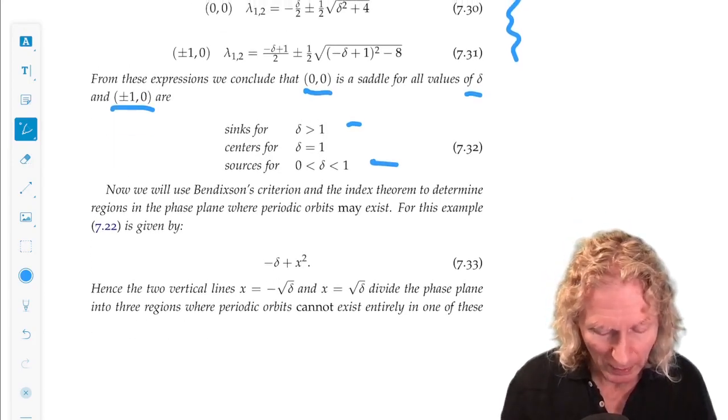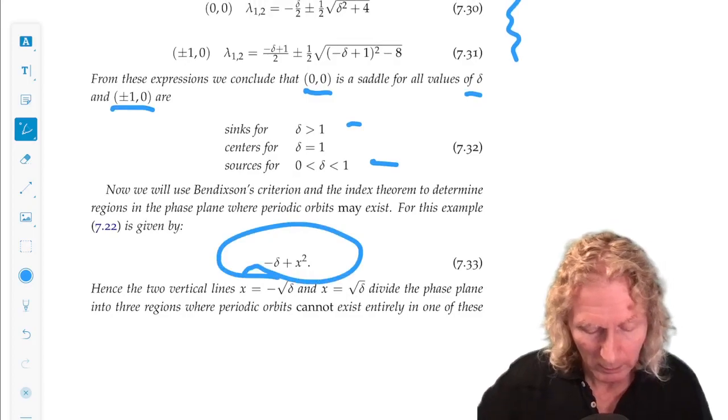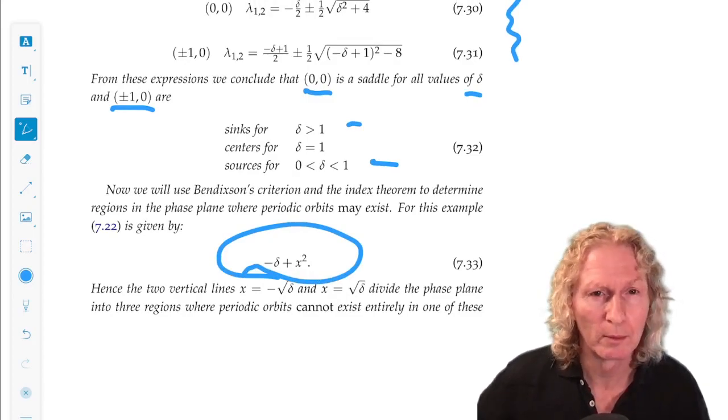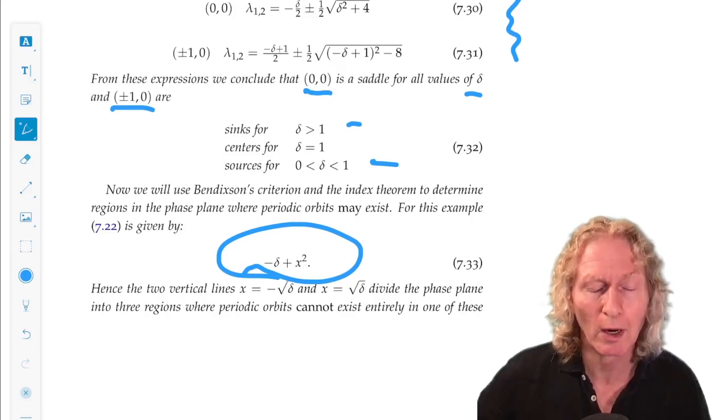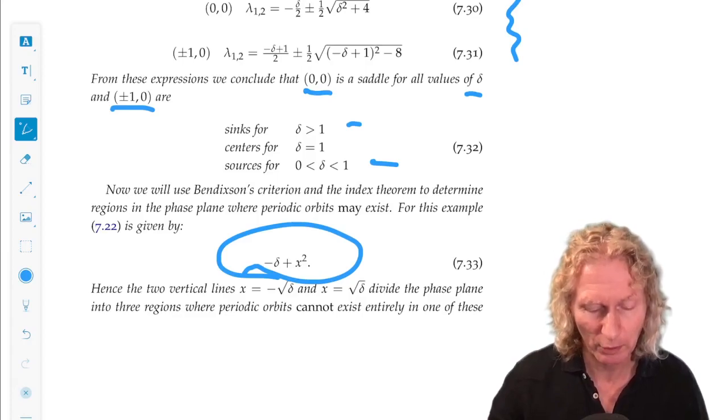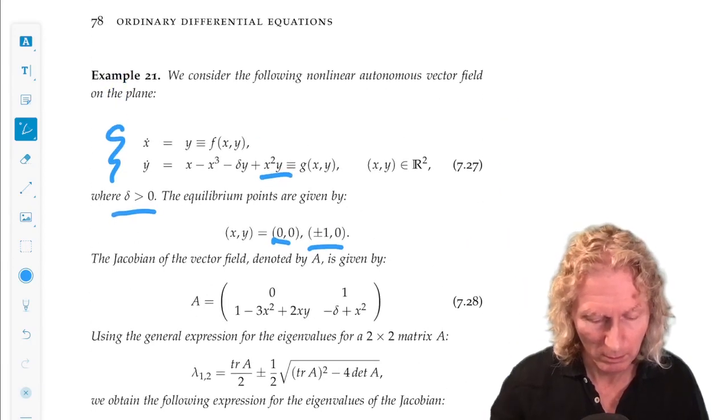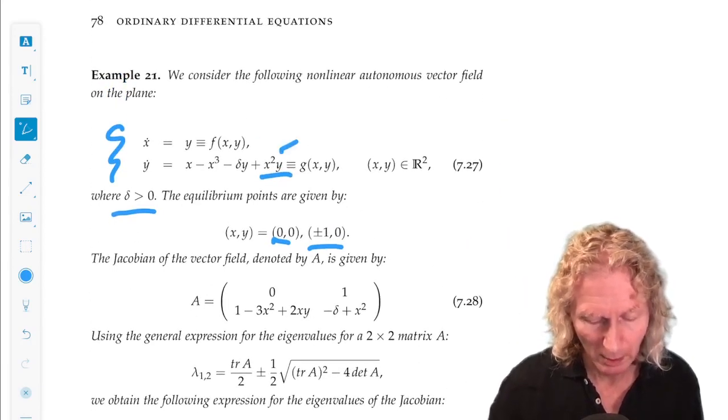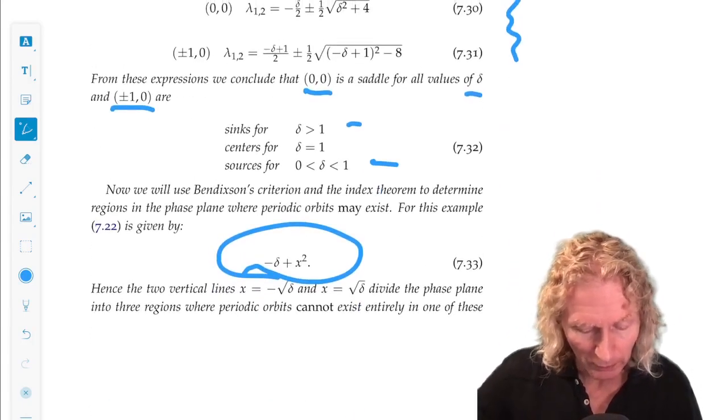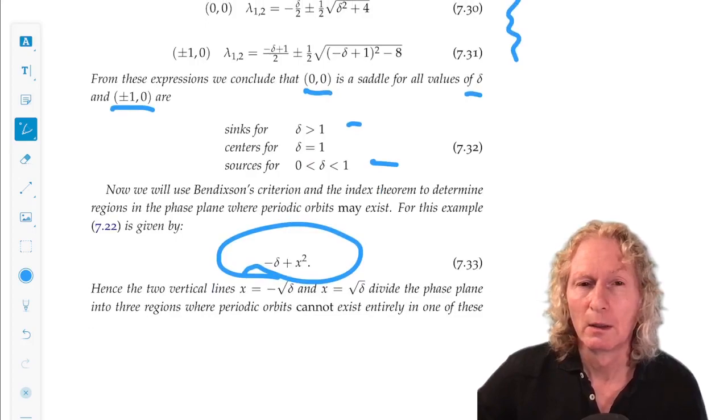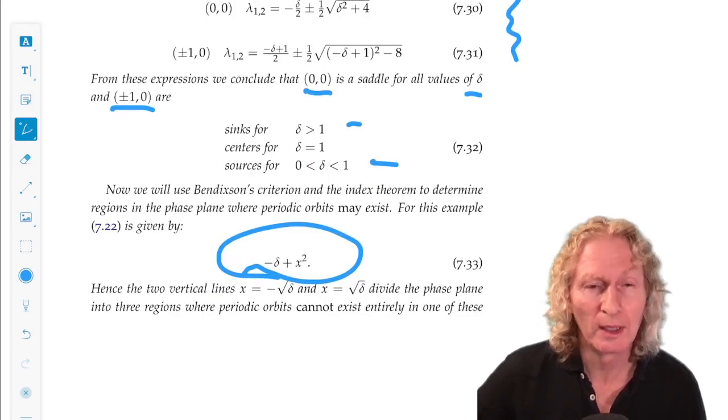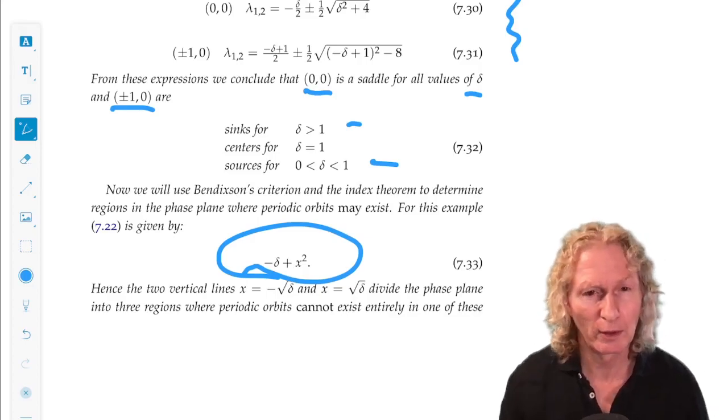So this is the quantity that we look at at Bendixson's criterion, df/dx plus dg/dy. It's minus delta plus x squared. That extra term gives us this. So we need to find regions where this term is not identically 0 and it doesn't change sign.